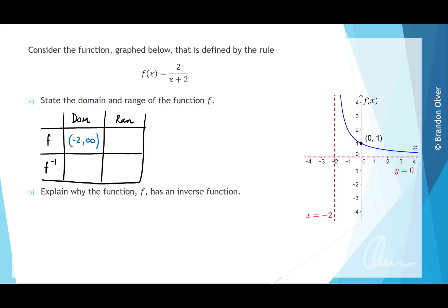The range can be observed to go from y equals 0, not included, up to infinity. So we write 0 to infinity with a round bracket. We've also drawn two extra cells for the domain and range of the inverse function. For inverse functions, we swap domain and range, so the domain of f inverse is 0 to infinity, and the range is from negative 2 to infinity.